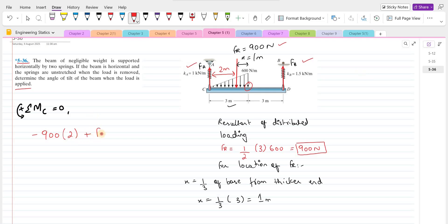So we have positive F B and the moment arm is 3 plus 3, 6 meters equals to 0. So upon simplification, force F B comes out to be 300 Newtons.